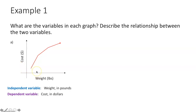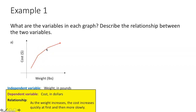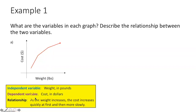It looks like as your weight increases, your cost also increases — initially rapidly, and then increases less over time. So we're going to say: as the weight increases, the cost increases quickly at first, and then more slowly over time.